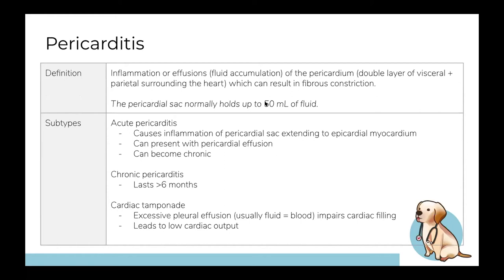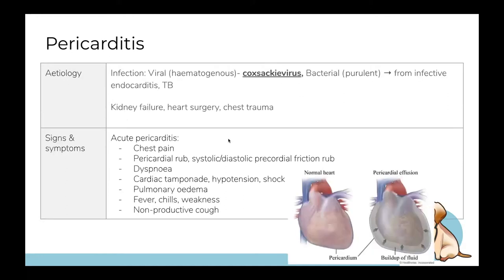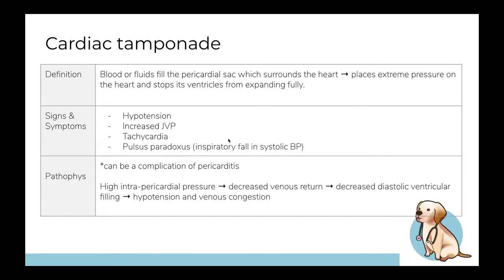Pericarditis is inflammation of the pericardium — it can be acute or chronic. Acute pericarditis usually involves a viral infection; the most common is Coxsackie virus, but EBV, CMV, and adenovirus are also possible. If pericarditis lasts longer than three months, it's classified as chronic. Symptoms include central chest pain worse on inspiration or lying flat, a pericardial friction rub, and if viral, systemic signs like low-grade fever. Cardiac tamponade is a complication of pericarditis involving compression of the heart, particularly implicating the right ventricle.